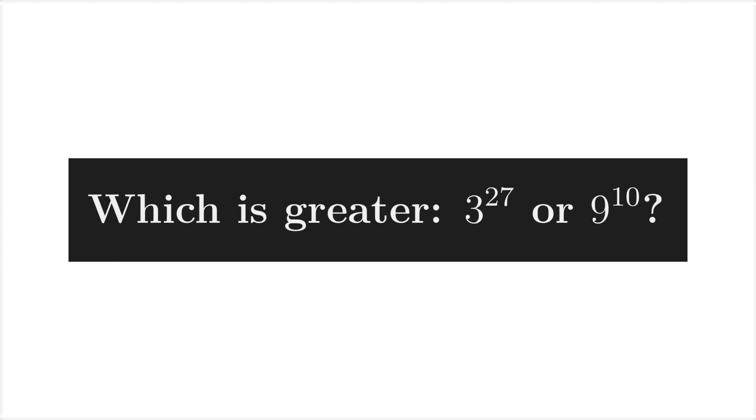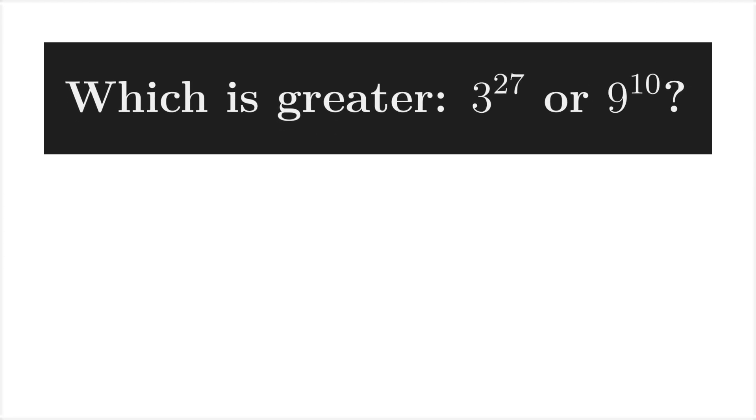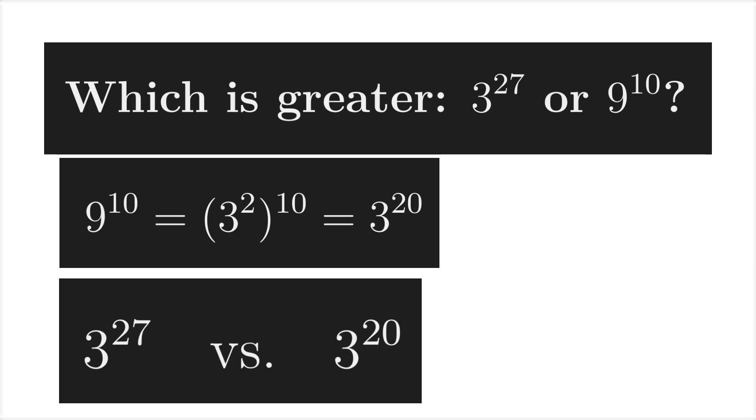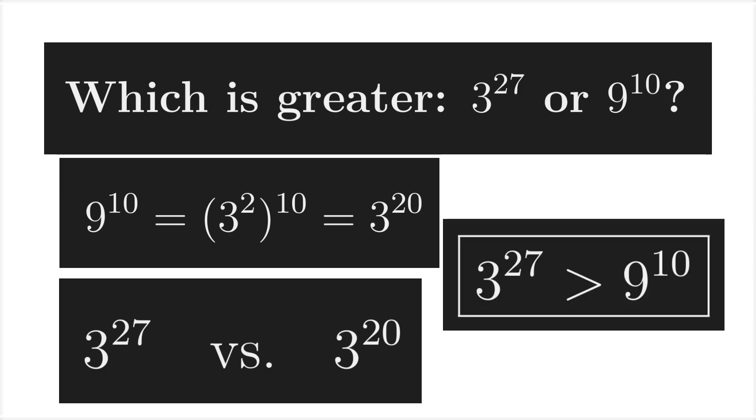Which is greater, 3 to the 27th, or 9 to the 10th? To solve this problem, we must change the base of 9 to the 10th. This becomes 3 to the 20th, and now we can directly compare. Obviously, 3 to the 27th is larger.